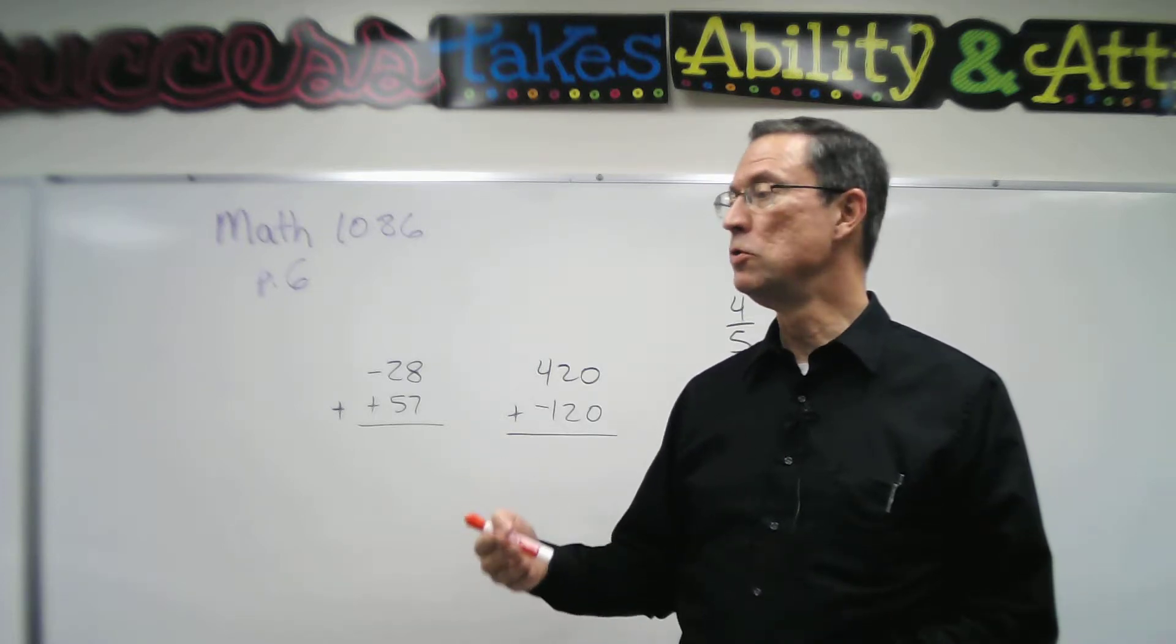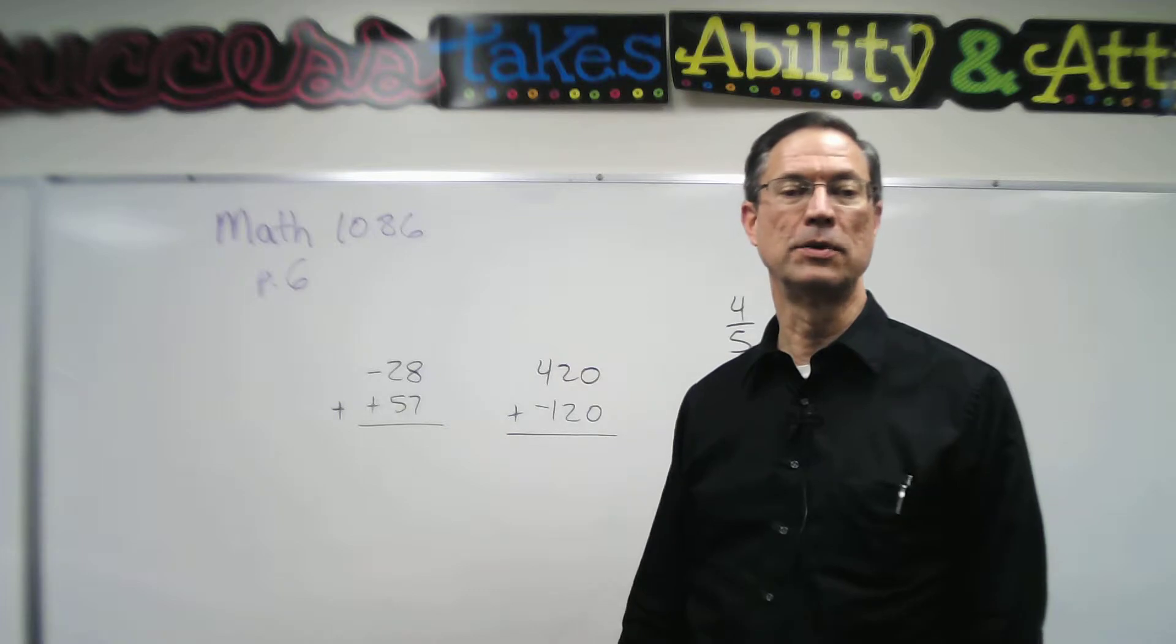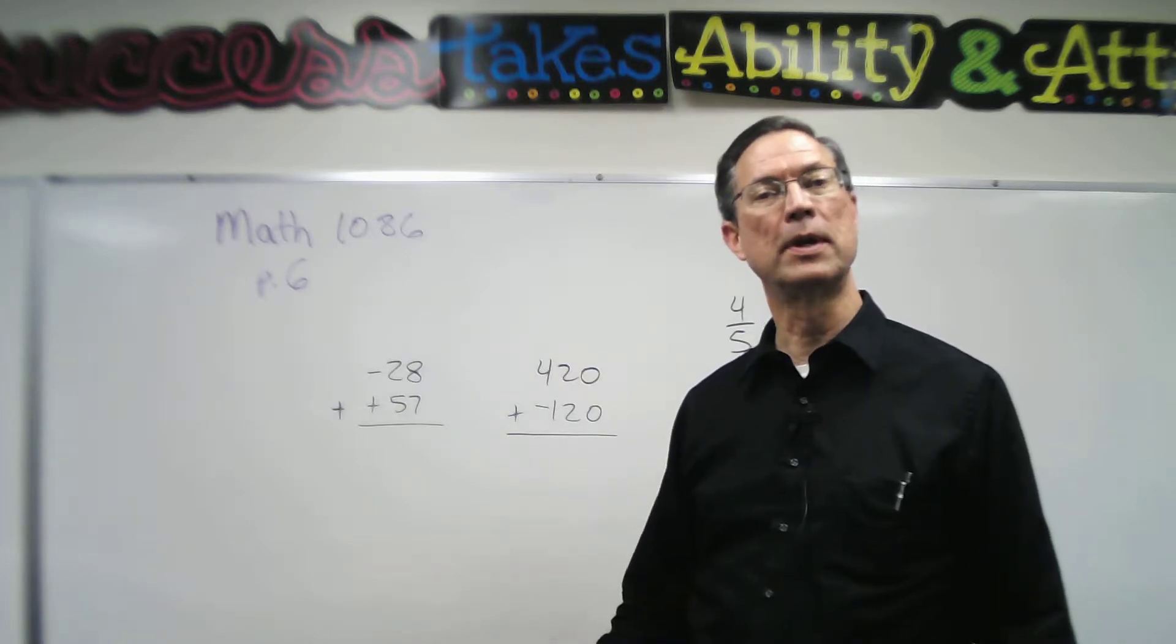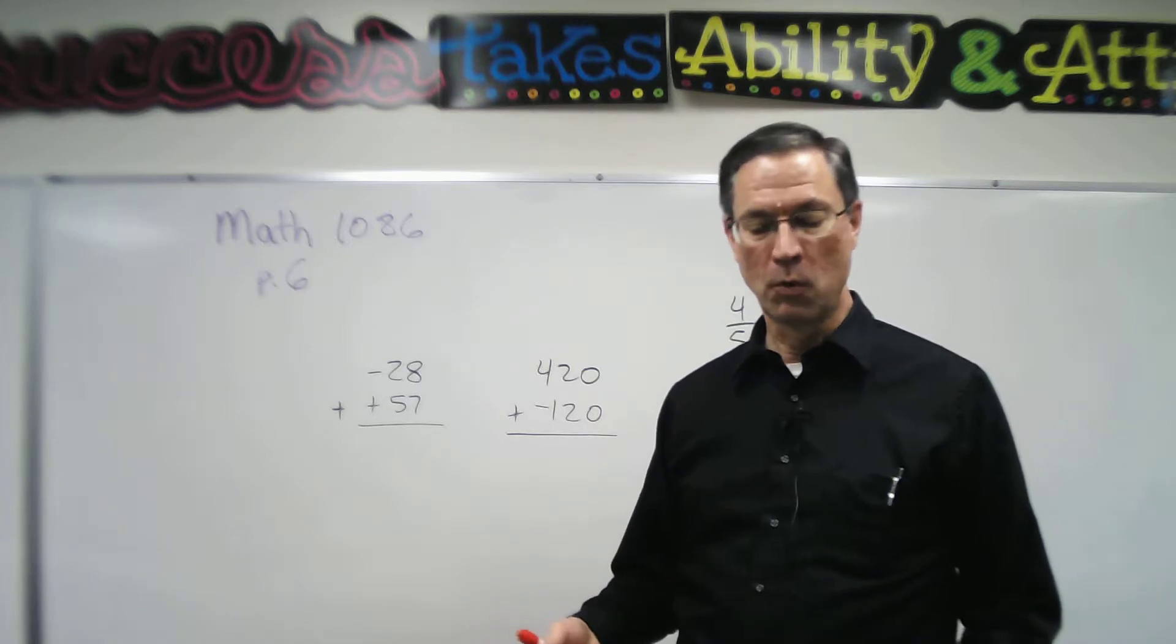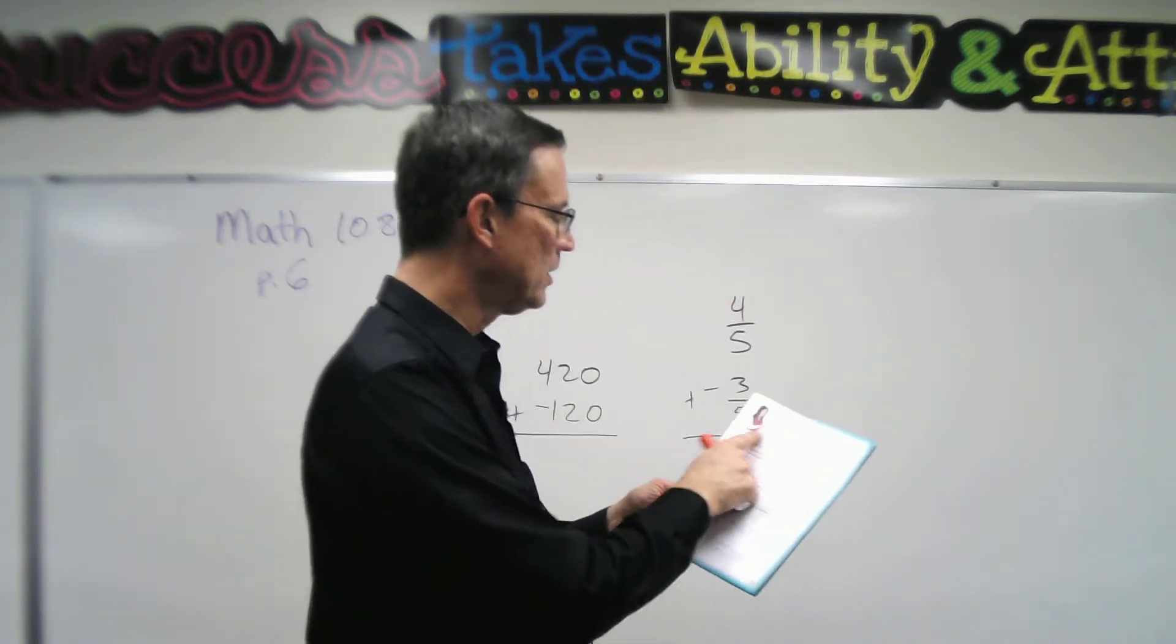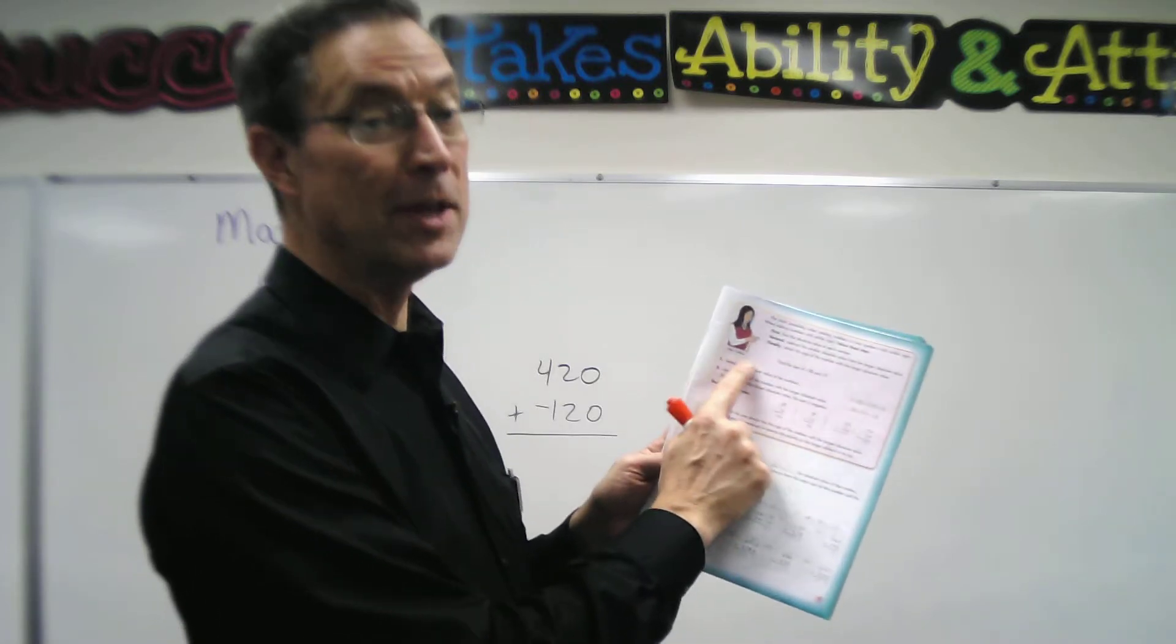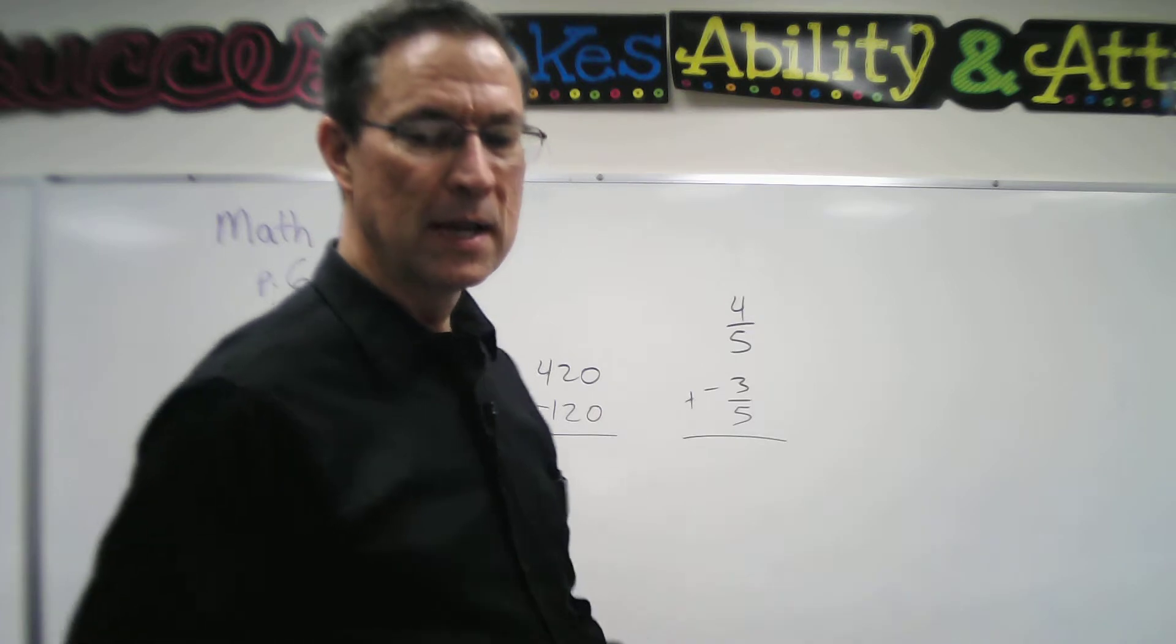When they're both negative, you just add the two numbers and attach the negative sign. So we add and keep the common sign when the signs are the same. What gets tricky is when the signs are different, and that's what Nina Faithful is talking about here at the top of page six.